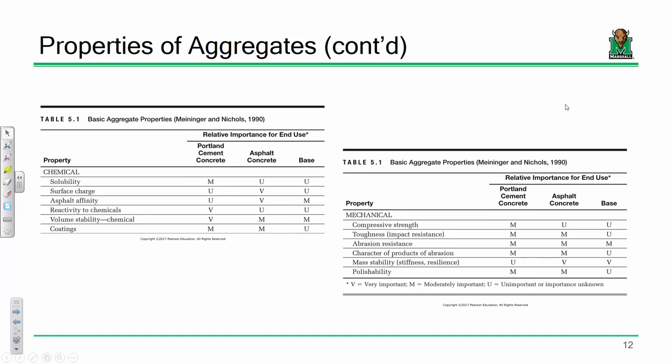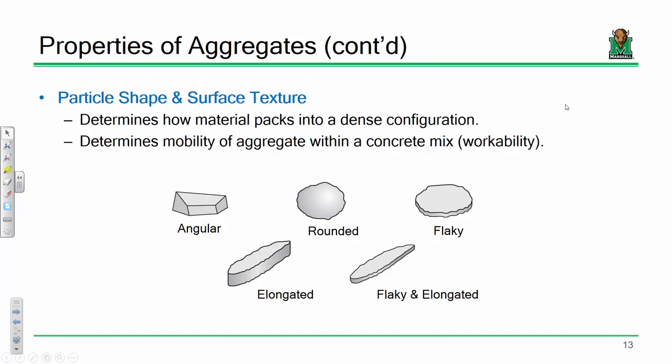You need to ensure your aggregate meets required chemical properties. There's also a series of mechanical properties that matter — things like compressive strength, abrasion resistance, and toughness. These come right out of your book. I would recommend giving them the once-over to make sure you have a general idea of what's important in concrete versus asphalt.